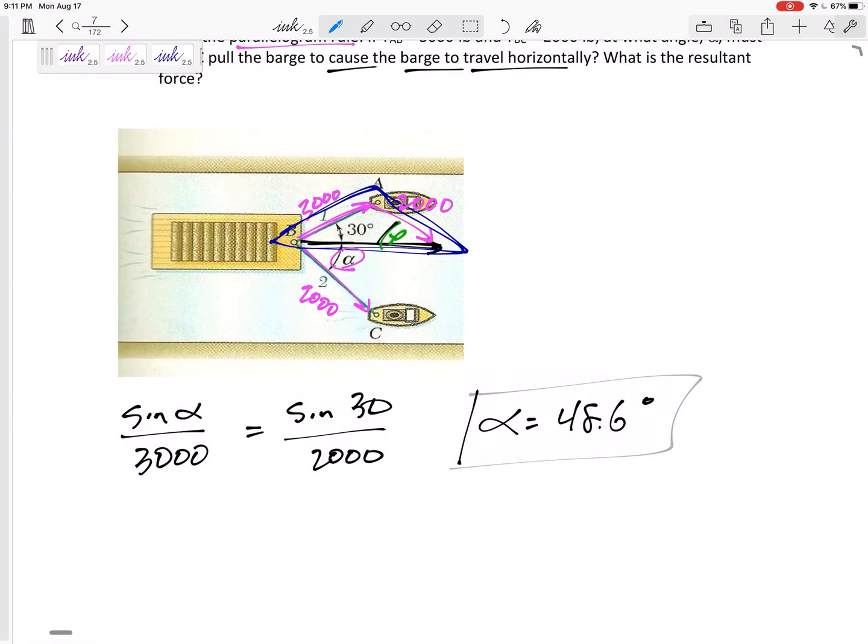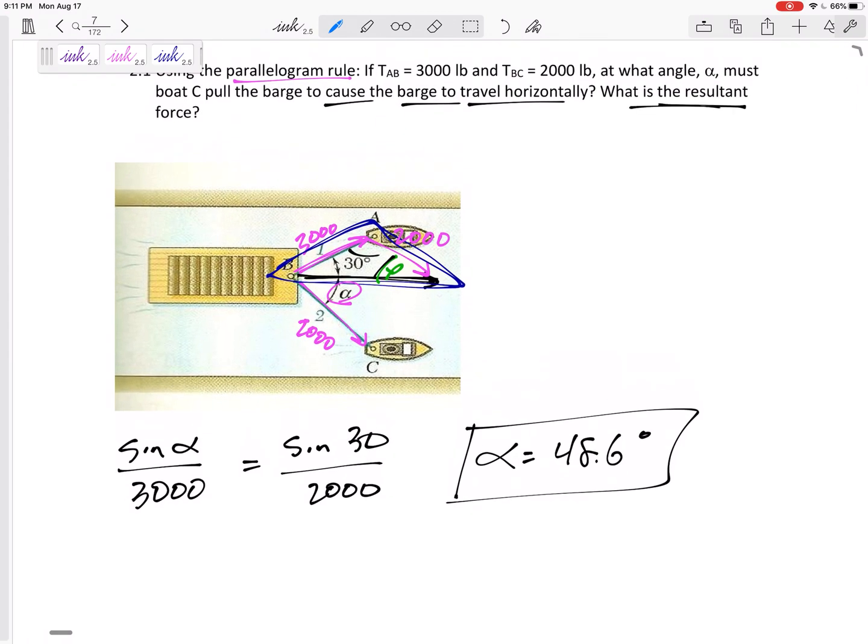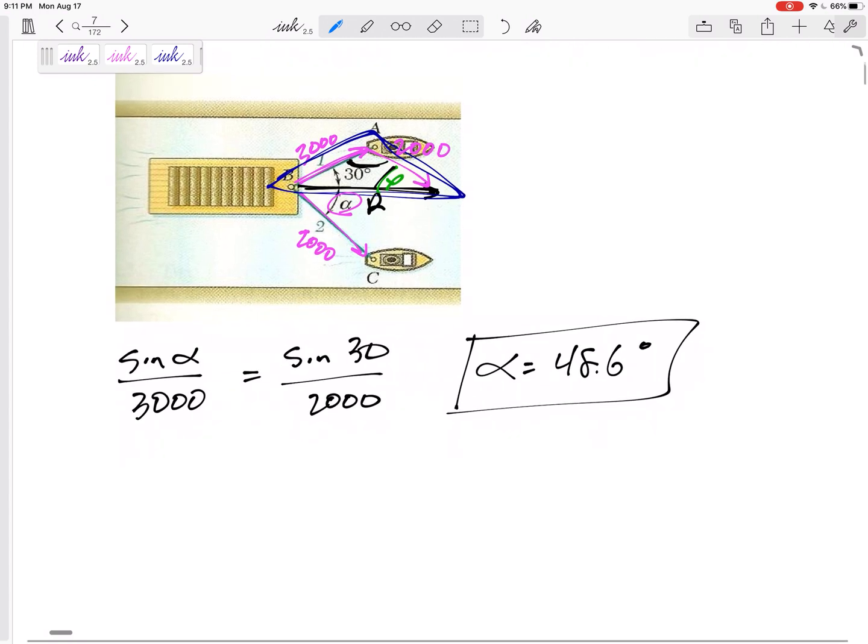Alright, let's find this angle theta just to double check. Because now we want to find what is the resultant R. So for the resultant R, if I knew this angle, which I really do because I know two of the angles, the third one, let's call this theta.